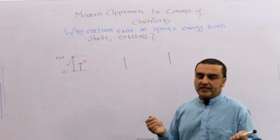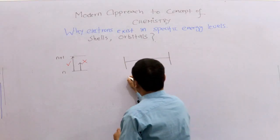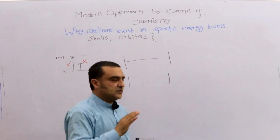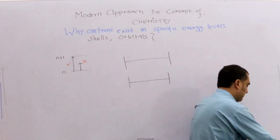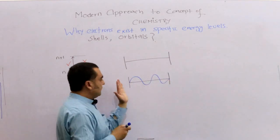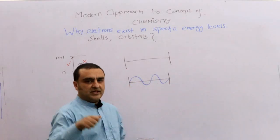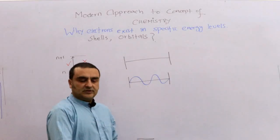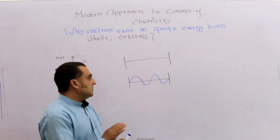Suppose there are two fixed rods with a string between them. You pluck the string and it produces a wave. The wave moves from one side to the other. If you have a string with both ends fixed and give it a strong jerk, a wave will be produced and will move along the string.